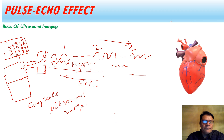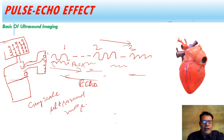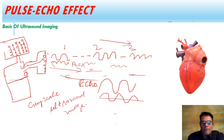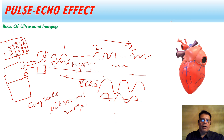If the echoes are very weak, we have a control on the machine called gain, which increases the amplitude of the echo so we can see the bright dots better. This phenomenon is also called B-mode or brightness mode.